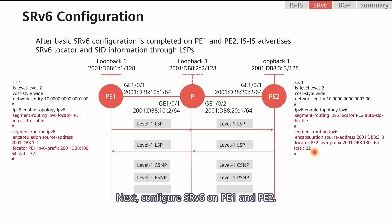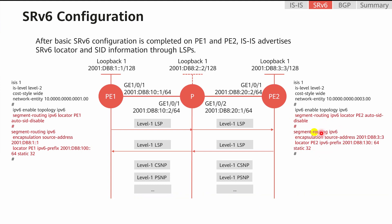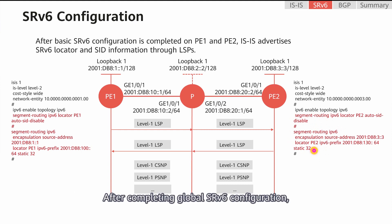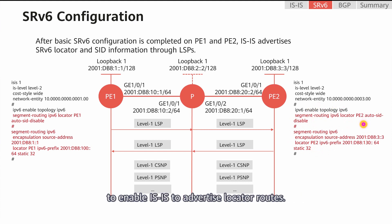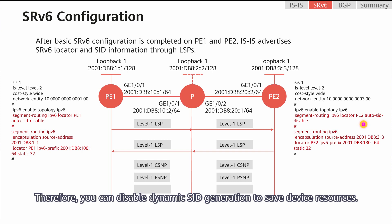Next, configure SRv6 on PE1 and PE2. The configuration process mainly covers enabling SRv6 globally and configuring a source address for IPv6 packet encapsulation. After completing global SRv6 configuration, run this command to enable IS-IS to advertise locator routes. In SRv6BE scenarios, SID and SID.X seeds used to represent paths are not used. Therefore, you can disable dynamic seed generation to save device resources.